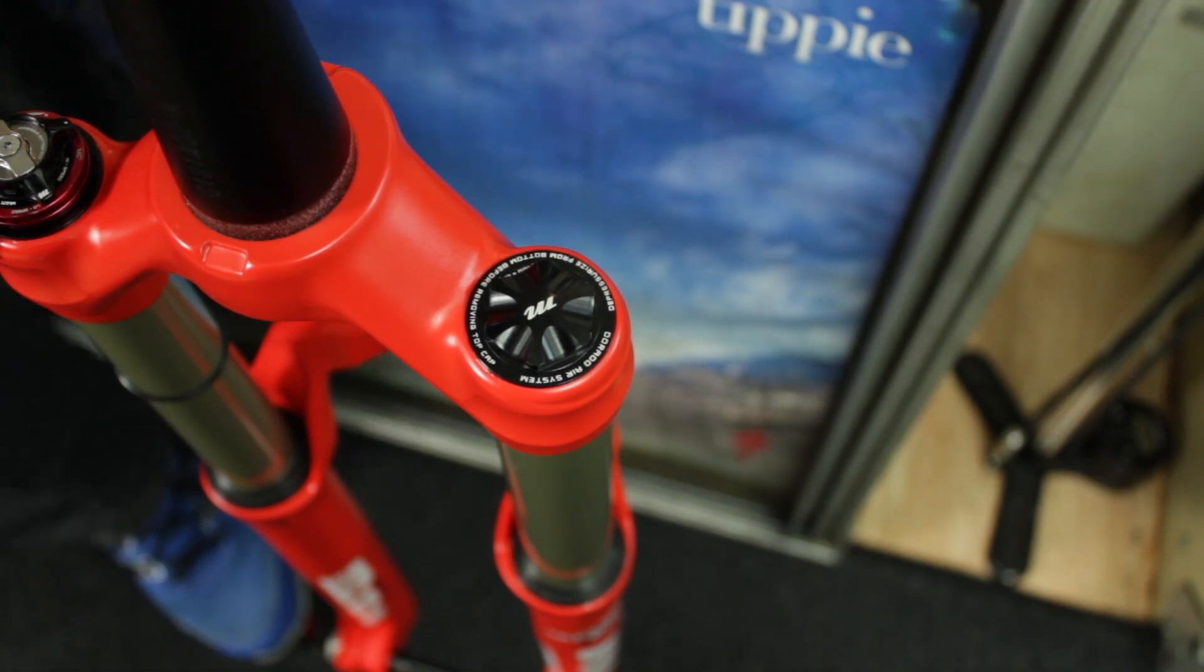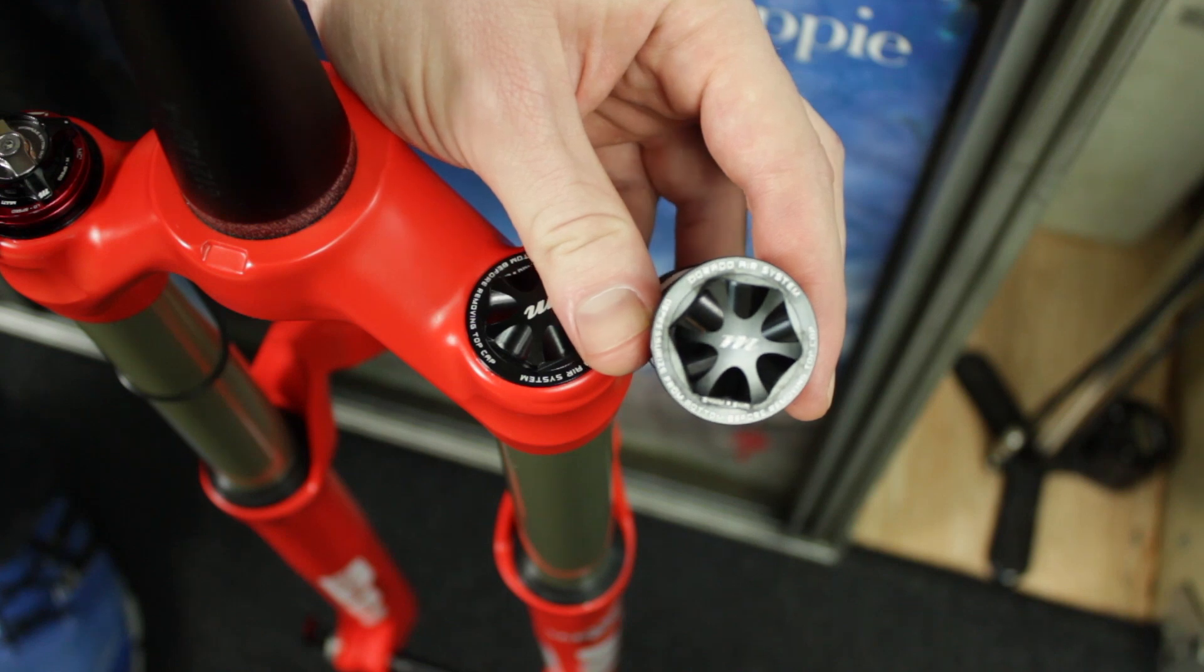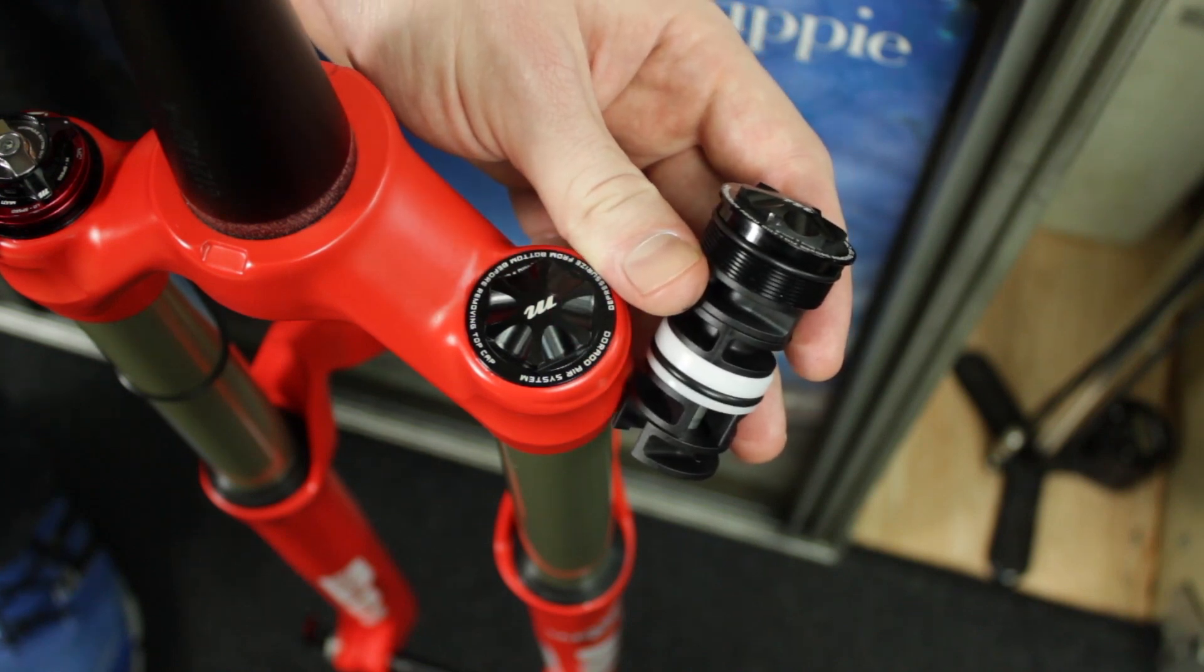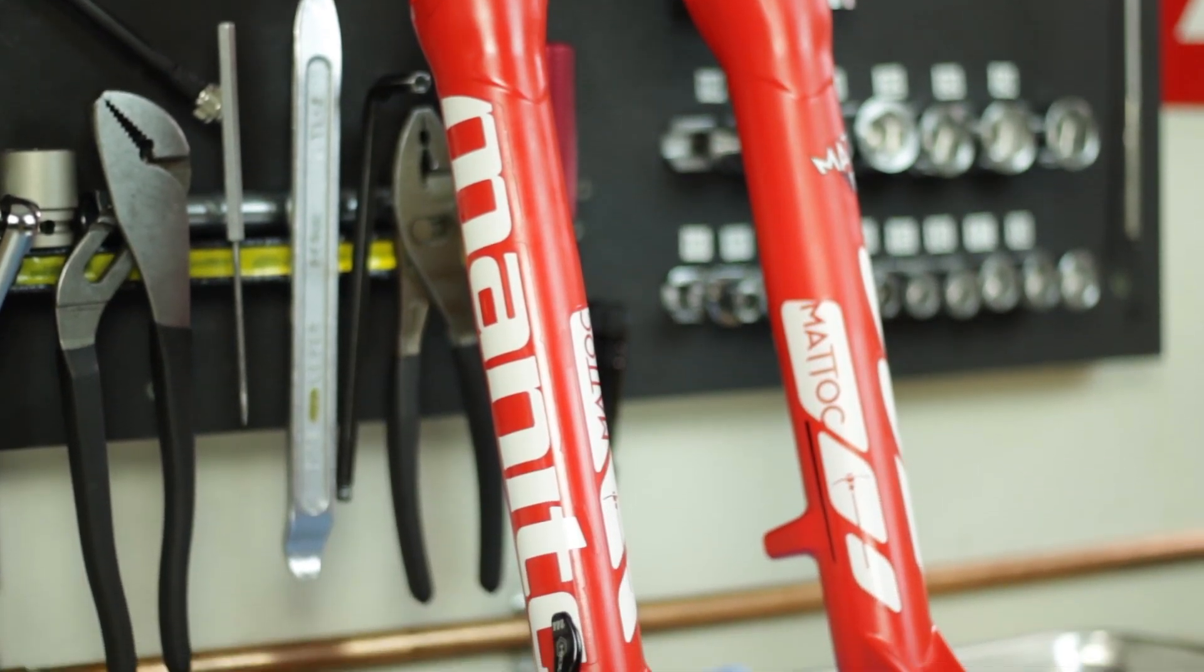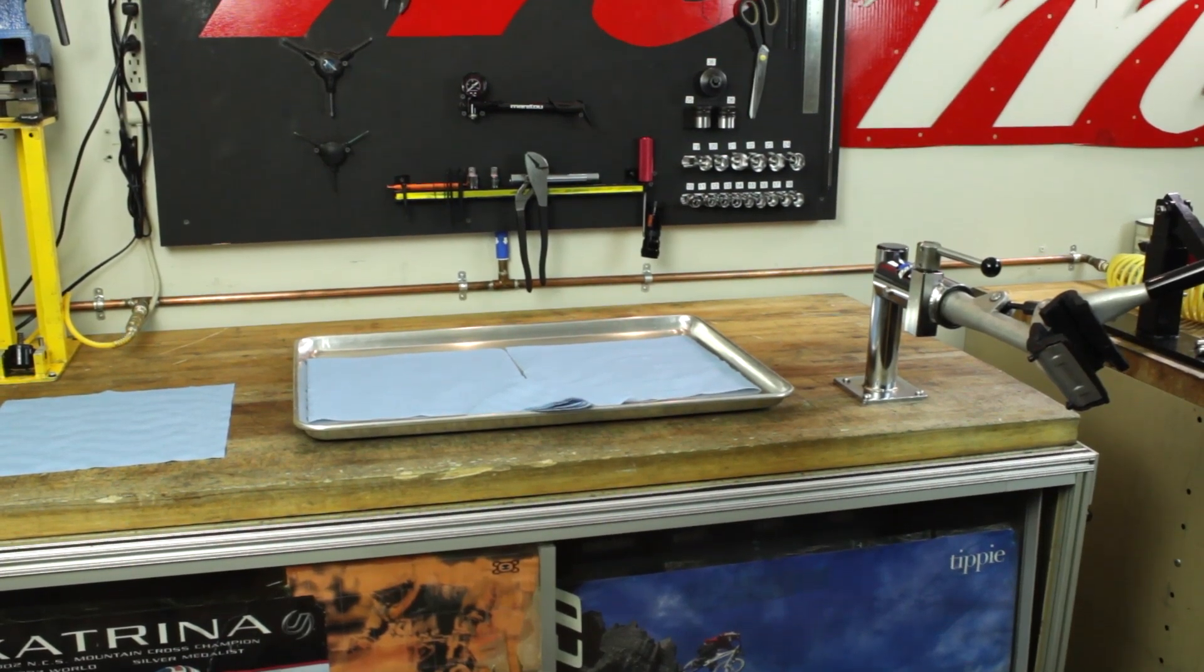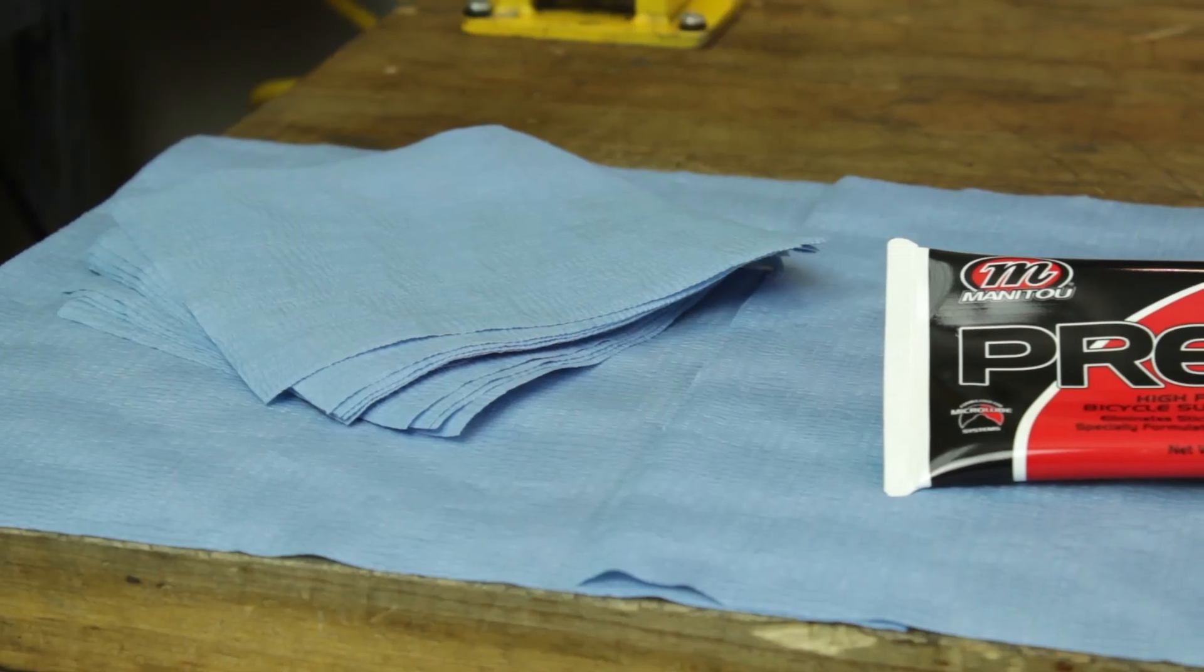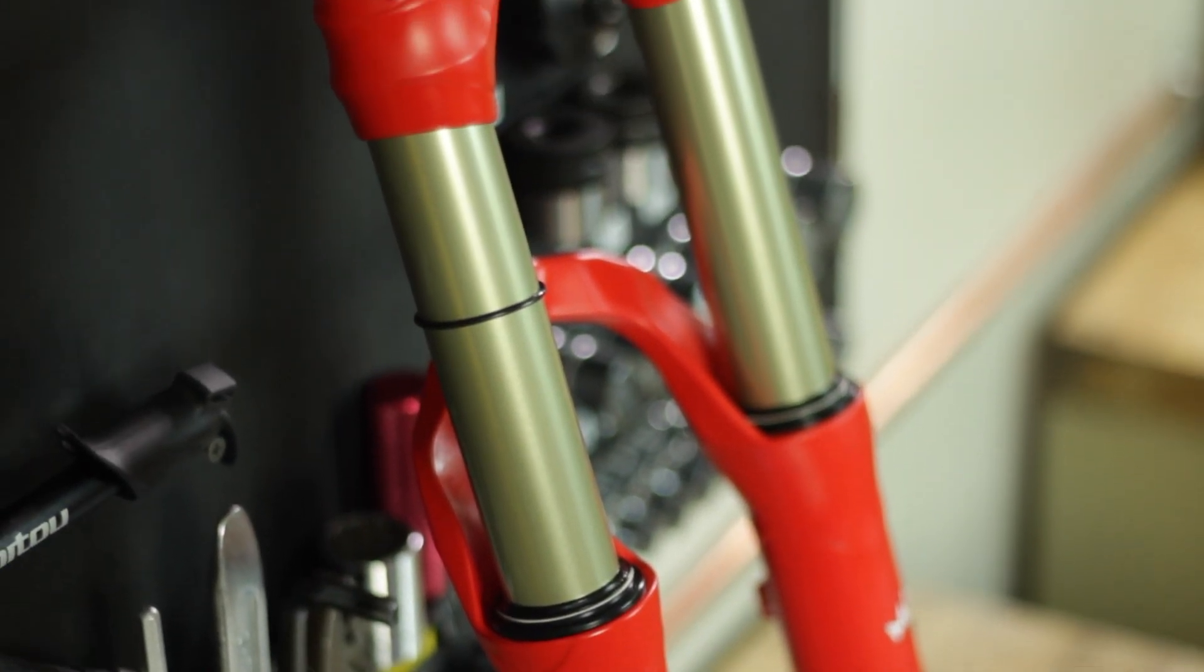All Matics produced in 2014 will have a standard air cap. Forks produced in 2015 and in the future will be built with a volume reducing air cap. When disassembling and reassembling a Matic or any Manitou suspension, be sure to work on a clean surface to prevent contamination. Be sure to use lint-free towels. Stray fibers can actually get caught between the inner legs and the seals of the outer legs causing fluid leaks.